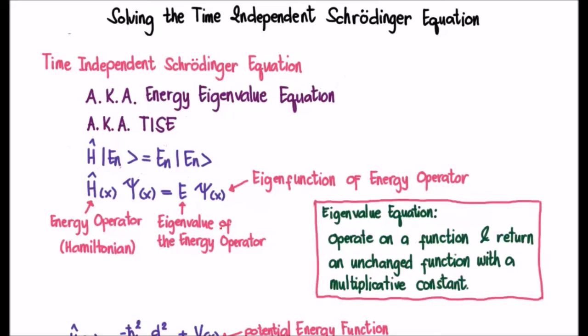The first thing I'd like to do is talk about terminology. How do people refer to this equation? Well, the simplest is to use the acronym TISE, and I use that regularly because it's nice and neat. But sometimes people will refer to it as the energy eigenvalue equation. Now what an eigenvalue equation is is something I'll cover very shortly.